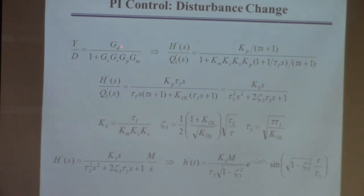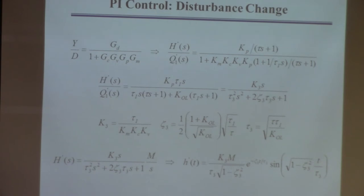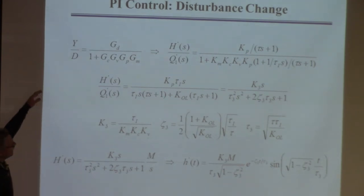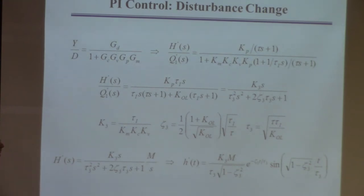The more complex I make the process or disturbance transfer function, and the more complex I make the controller, the higher the order of the denominator — you might end up with a fifth-order denominator or something like that. So once you get beyond this level of complexity, you just want to go to Simulink and do it. Simulink will do it in seconds.